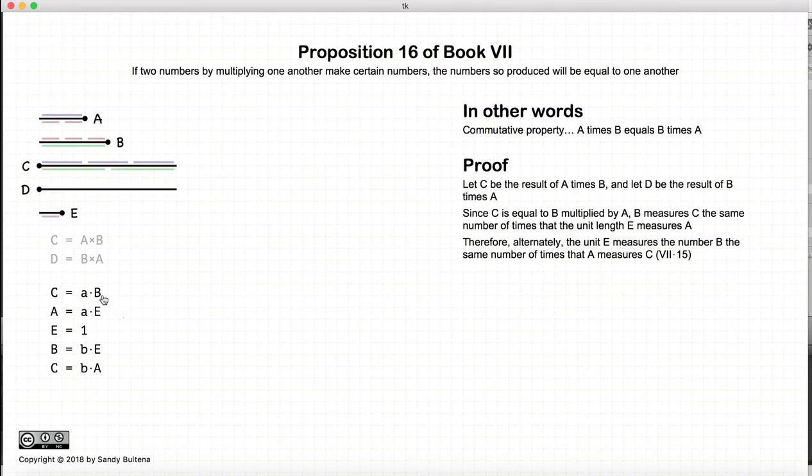Now, since we have that the unit e measures a the same number of times that b measures c, according to proposition 15 of this book, that also means that the number of times that e measures b is the same number of times that a measures c. So a to b, a to c. That's how you can remember it.